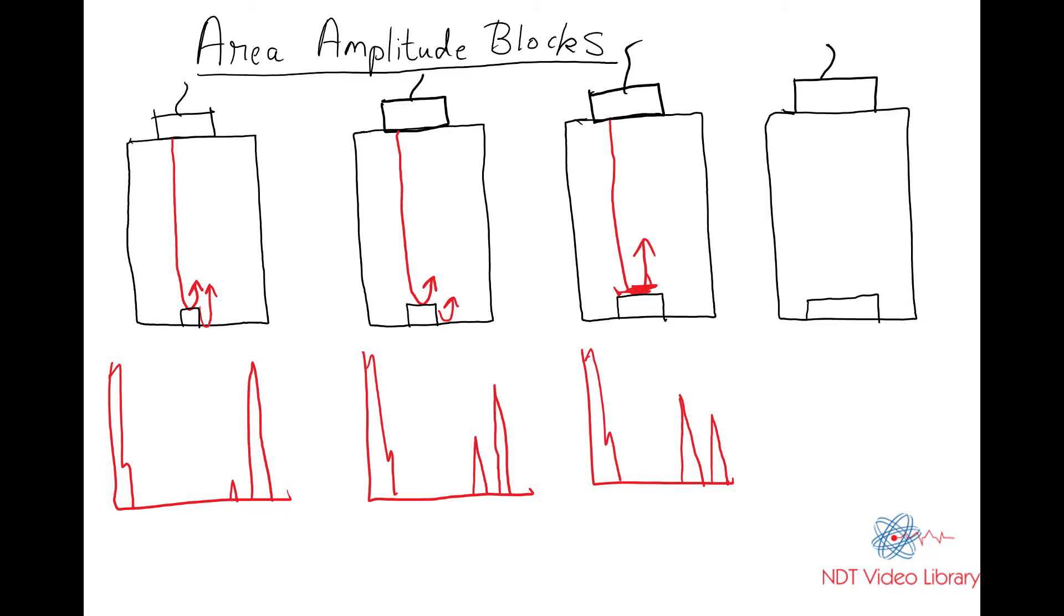Same thing for the fourth one. Maximum sound will be reflected from the flat bottom hole, so it would be the tallest peak. And then the back wall would be the shortest. Does that make sense?